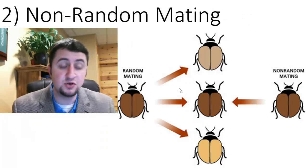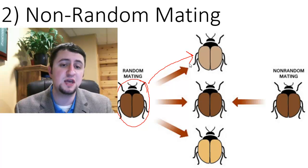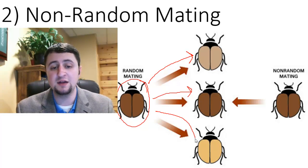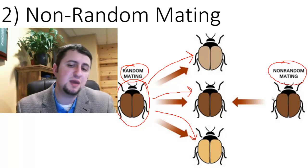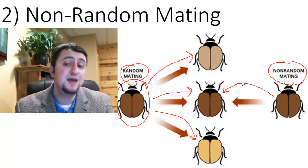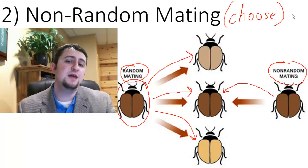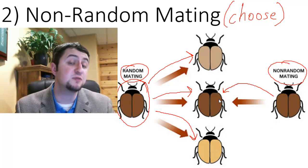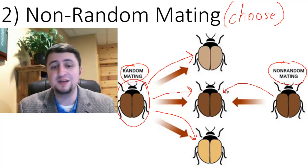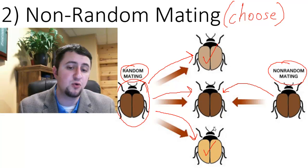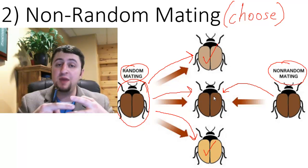The second way that evolution can occur is through what we call non-random mating. If this brown beetle mates with light-colored brown beetles, other brown beetles, and orangey-yellow beetles, that's random mating. However, if that beetle is only attracted to other brown beetles, that's non-random mating — where organisms choose who they mate with. If a brown beetle only mates with a brown beetle, they're only going to have brown babies. So instead of seeing light brown and orangey-yellow in the future, we're only going to see brown beetles, just because brown beetles only like to mate with brown beetles.